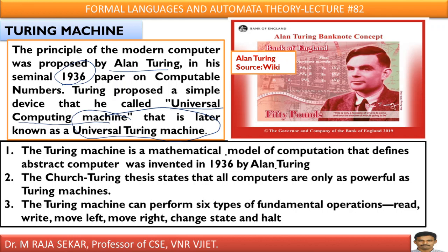The Turing machine is a mathematical model of computation that defines abstract computer, otherwise I can say digital computer. The Church Turing thesis, in future classes I will discuss what is Church Turing thesis. Time being, let me say, the Church Turing thesis states that all computers are only as powerful as Turing machines.